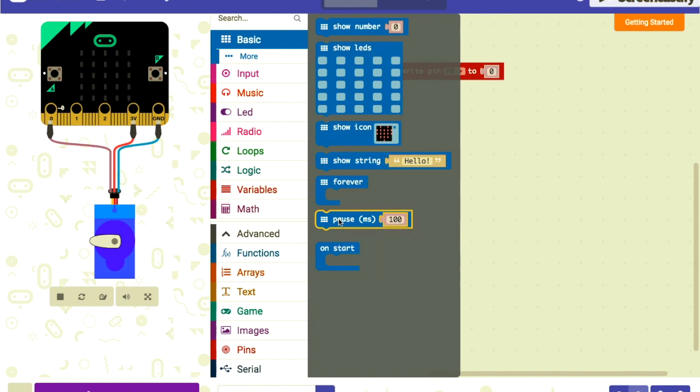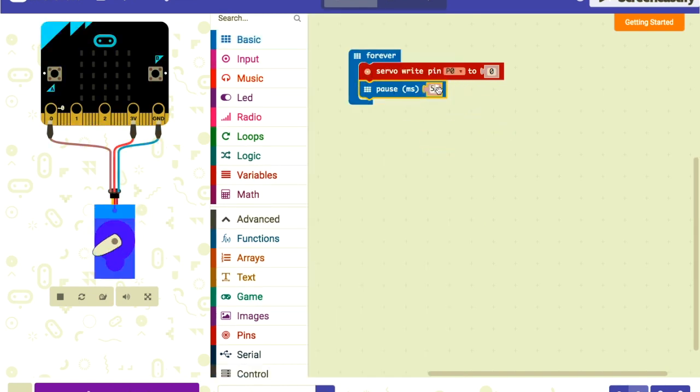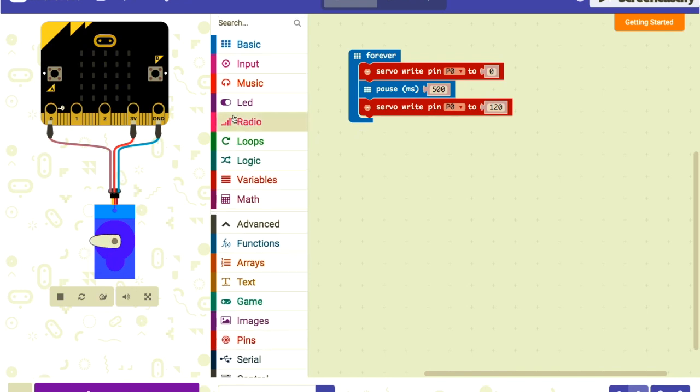We'll get the pause block under basic and just wait for 500 milliseconds, so half a second. Then we're gonna move the servo - go back to pins, servo write pin zero, and this time let's move it to 120 degrees. We'll put another pause block here before it goes back to the beginning of the loop and goes back to zero. On the simulator the servo is just gonna move back and forth like that, and we'll use that to move the tail and mouth of our fish. Then I'll click download.